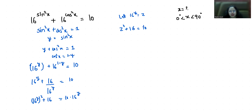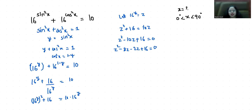So z² minus 10z plus 16 equals 0. This is a quadratic equation. We can split the middle term as negative 8z minus 2z plus 16 equals 0. Taking z as common from the first two terms gives z(z minus 8), and taking negative 2 as common gives minus 2(z minus 8) equals 0.